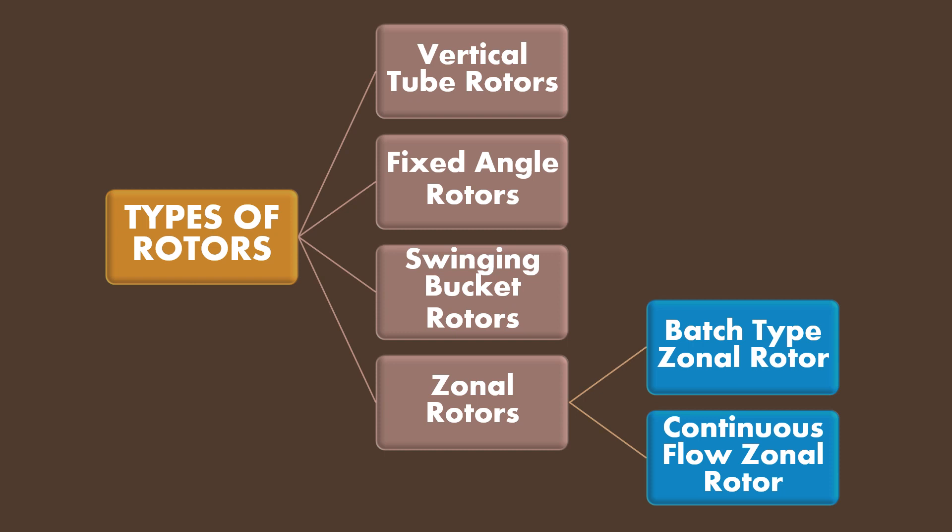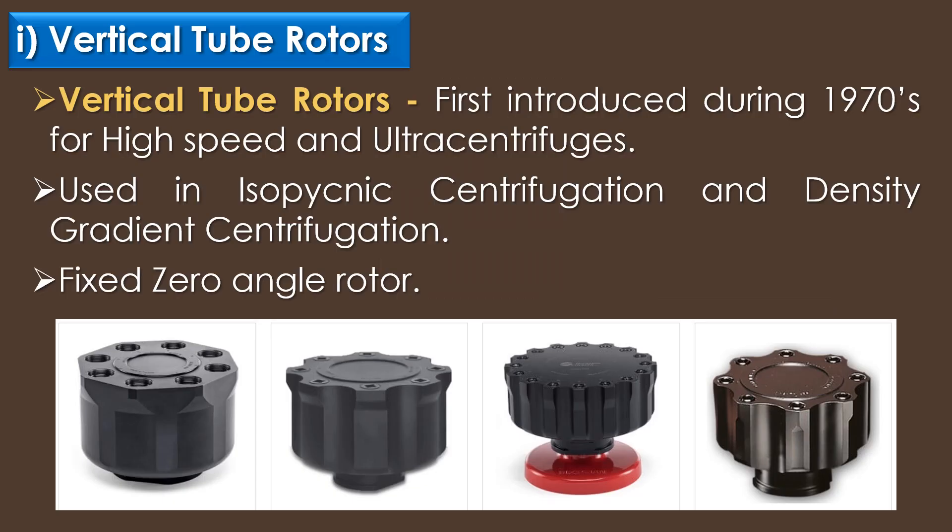The zonal rotors are further categorized into two types: batch type zonal rotor and continuous flow zonal rotor. The first type of rotor is vertical tube rotors. Vertical tube rotors were first introduced during the 1970s for high speed and ultra centrifuges. They are commonly used in isopycnic centrifugation and density gradient centrifugation. The vertical tube rotor is a fixed zero angle rotor.